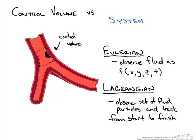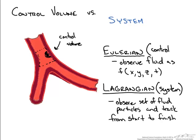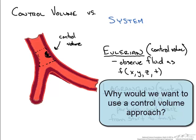System approaches are very much a Lagrangian perspective, and using a control volume is very much a Eulerian approach. So why is a control volume approach more appropriate for analyzing fluids in motion in most cases?